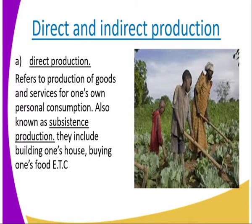Examples of direct production include building one's own house, growing one's own food, and cultivating a piece of land — as you can see in the image. All of that is direct production.